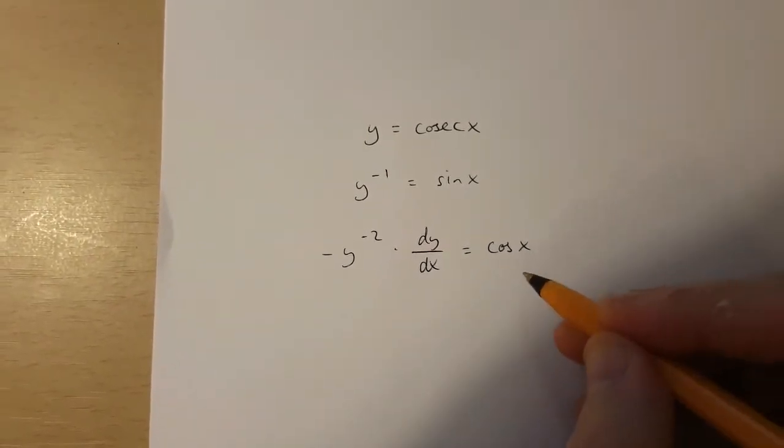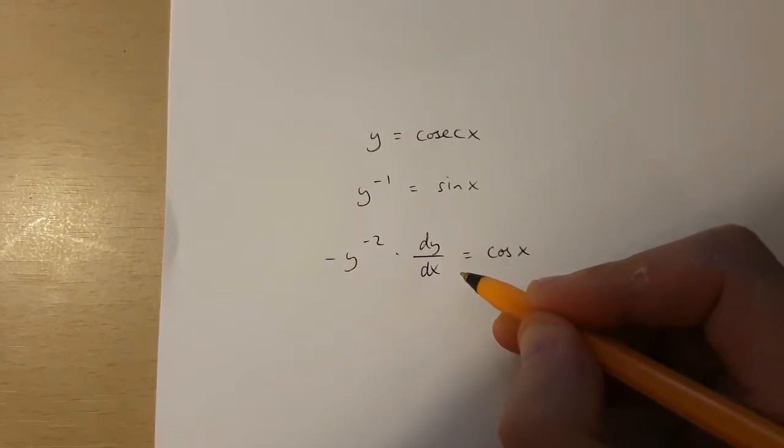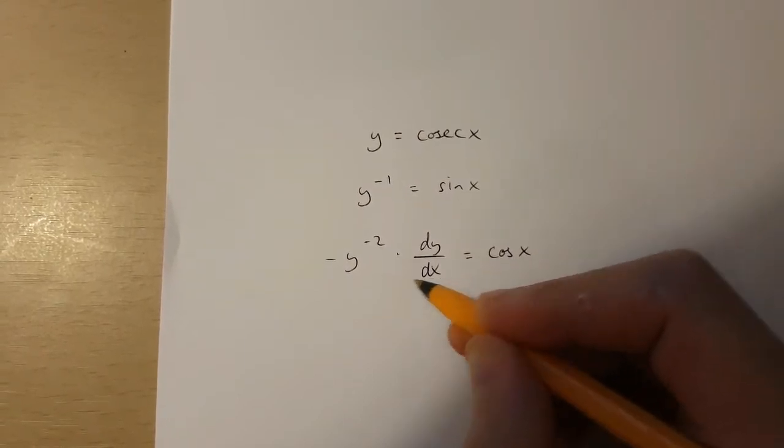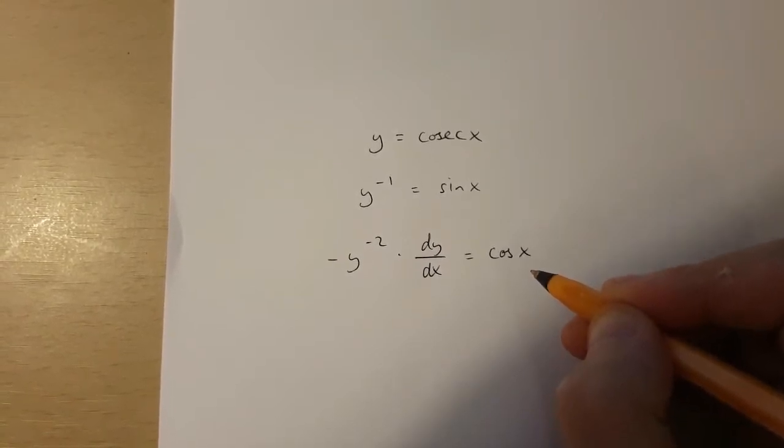Now if I want to isolate dy over dx, I simply have to multiply both sides of this equation by minus y squared.